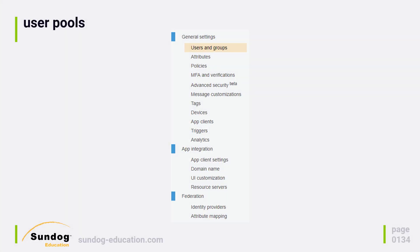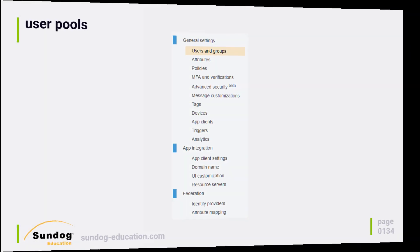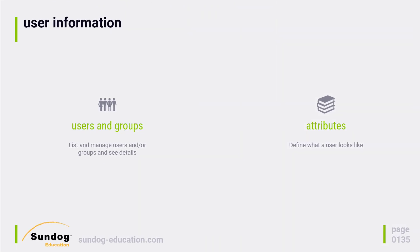Since we're using User Pools, we're going to spend most of our time talking about them. There are a lot of features, so we're not going to go into too much depth, but we want to give you an idea of what is available even if we're not using it for our project. We're going to break the features into a few different groups. The first group is User Information — right from the top, you have the ability to see your users and groups, which is really useful for user management and creating groups with particular roles.